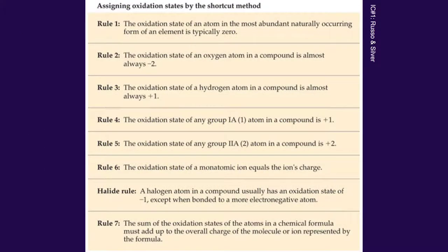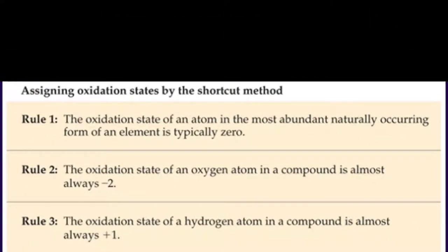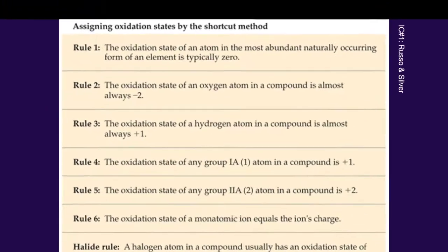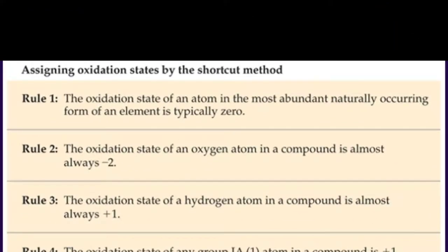Here's the chart provided by the book. It breaks it out into eight different rules, strangely numbered rule 1 through 7, with something called the halide rule sneaked in. The first rule says that if you have a pure element, that pure element will have no charge — an oxidation state of 0. The second rule says that the oxidation state of oxygen is normally negative 2, which we already know.